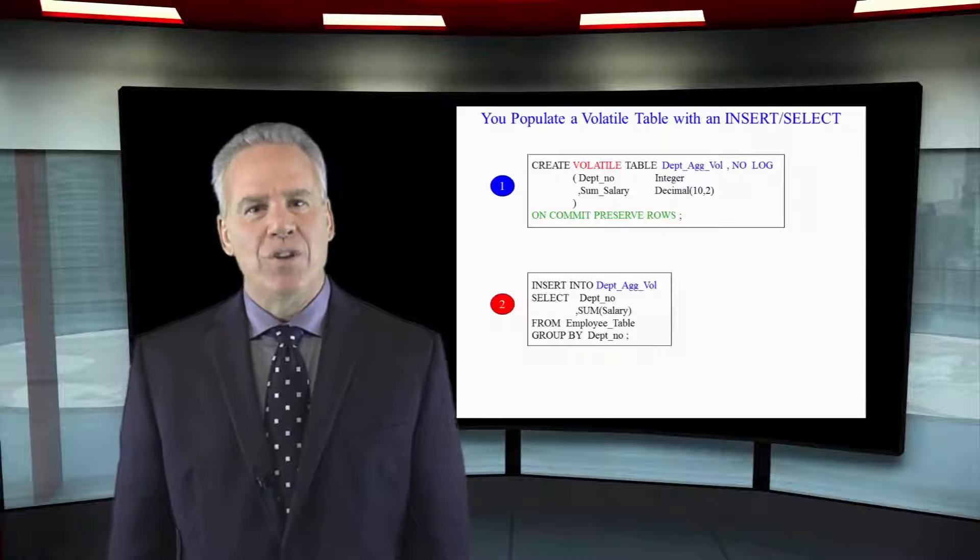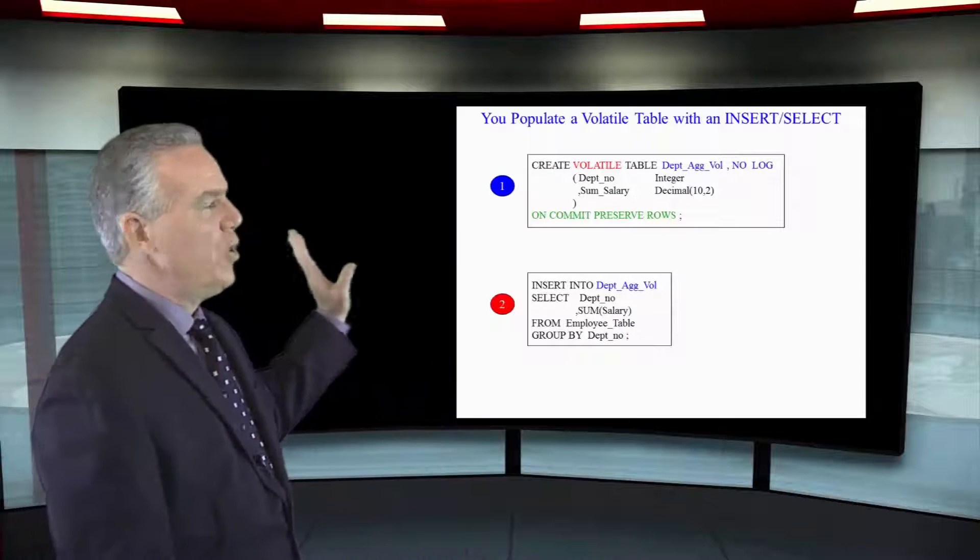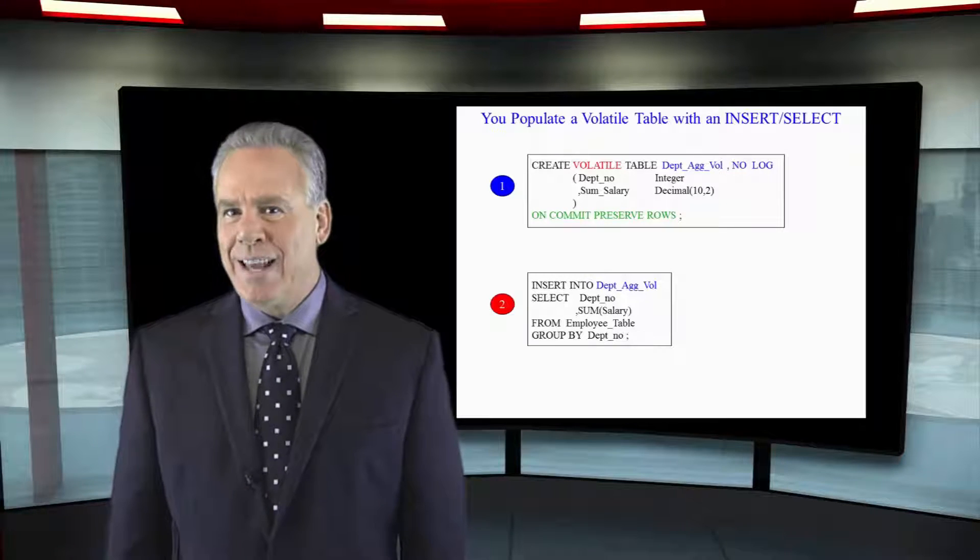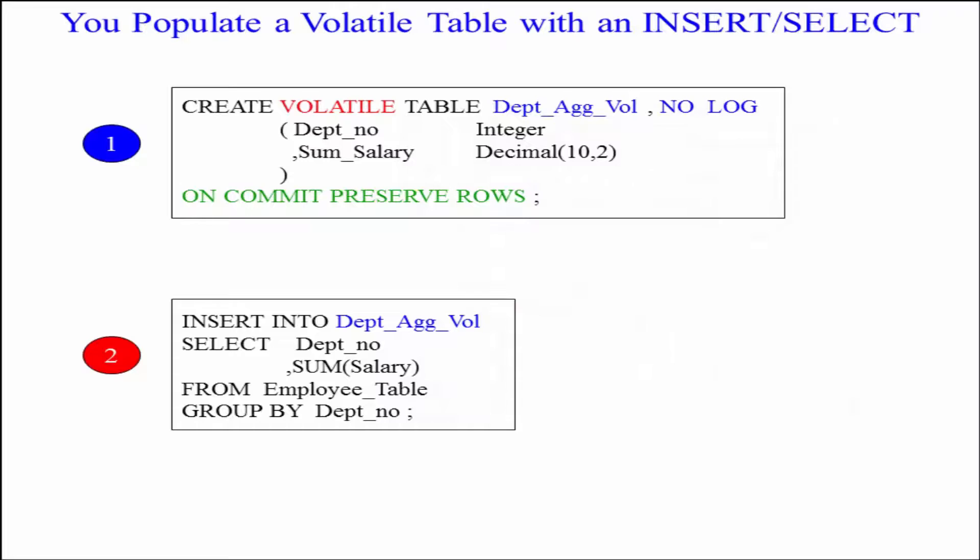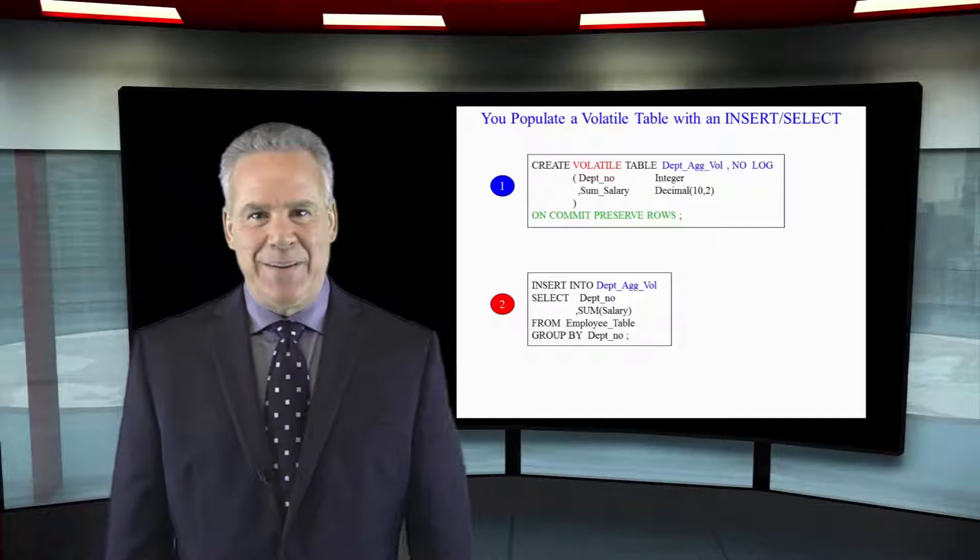Here I want to show that in step one you create the volatile table and then in step two you use an INSERT SELECT statement to materialize or put rows inside the table.